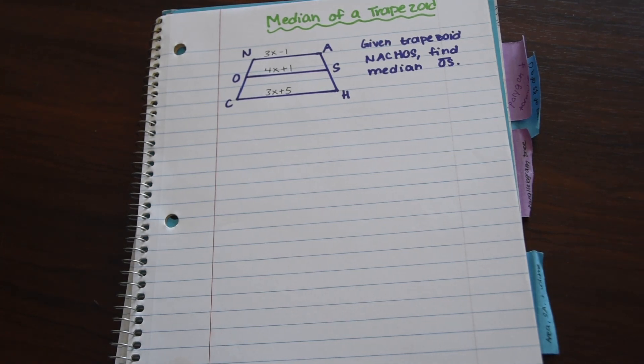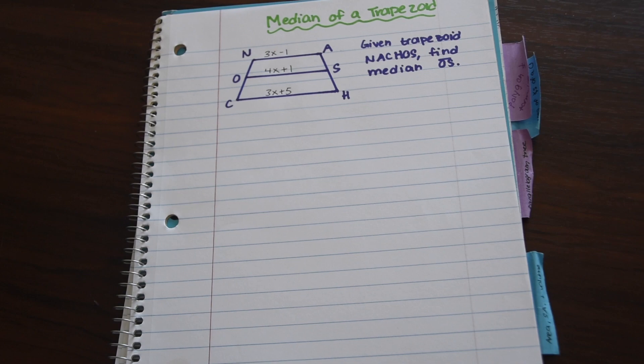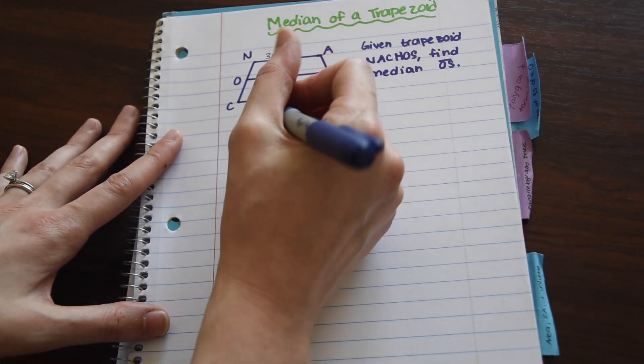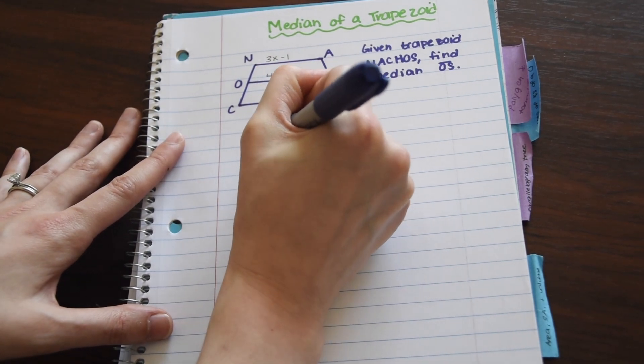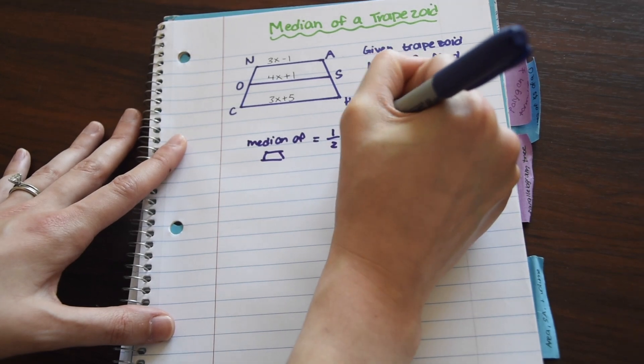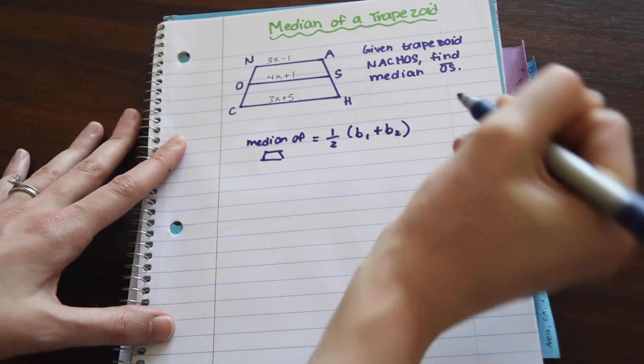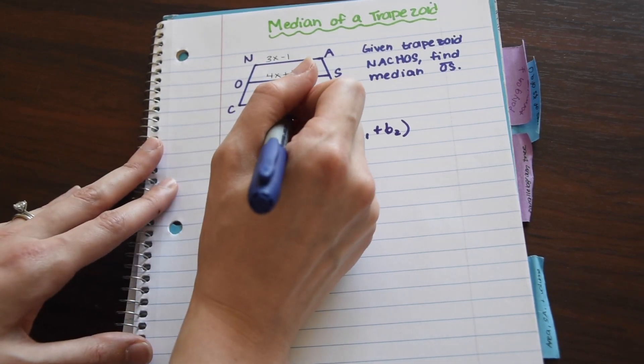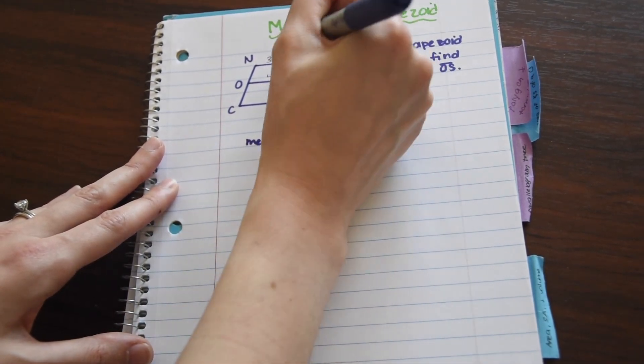So now to answer this question, there's a really nice theorem called the medians of a trapezoid theorem that we can use that says the median of a trapezoid is equal to half the sum of base 1 plus base 2. So base 1 and base 2, that's just these guys over here, base 1, base 2.